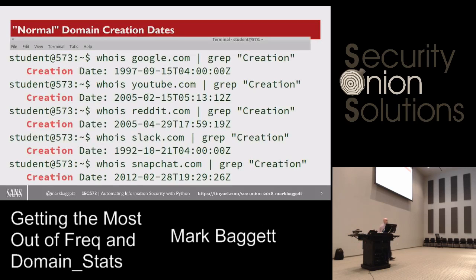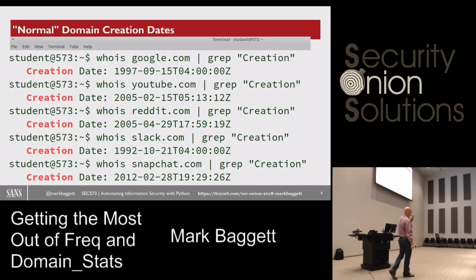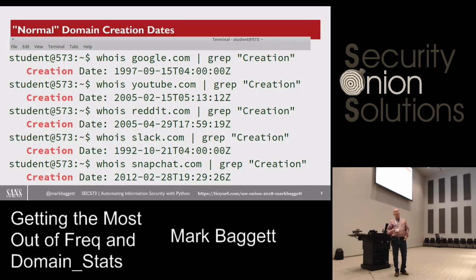Here's what DomainStats does for you. It looks at when domain names were registered. If I want to bring up a website like Google, I have to go to a registrar and buy that domain. When I do, there is a domain creation date — it's born, right? The record for that is first created. As it turns out, domains like Google, Instagram, and YouTube all have creation dates that are pretty old. Snapchat's the baby of the group, and it's 2012 — so it's six years old. These legitimate domains take a while before people start using them, and they have older creation dates.